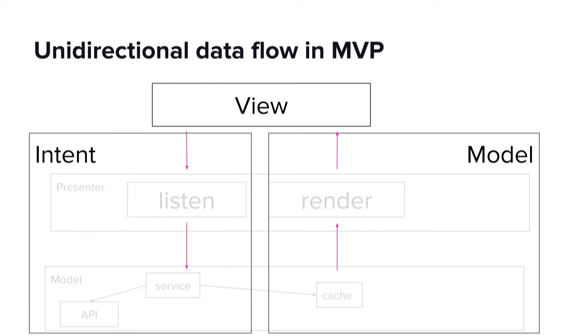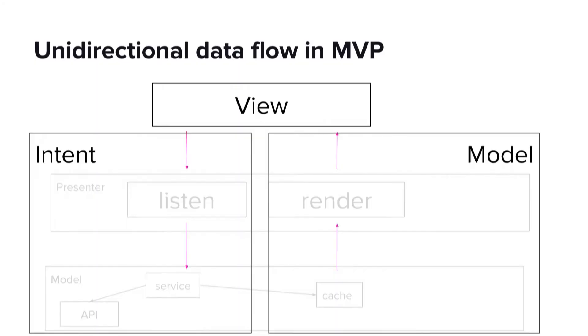If we separate the output of the view from the input of the view, we can see how a model view intent works on top of MVP. The intent represents the action and the desired business logic in response to an event, whether it's a user input event or a system event. And the model represents the single source of truth that the view is subscribed to.